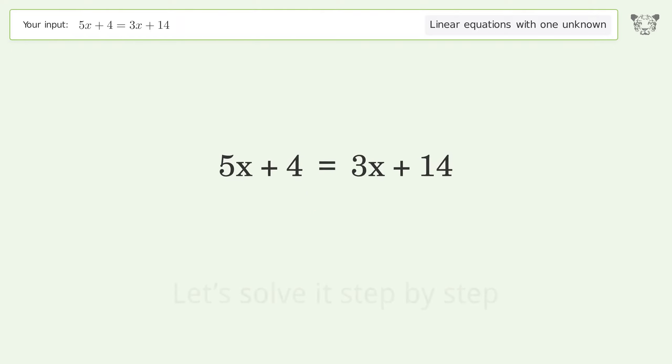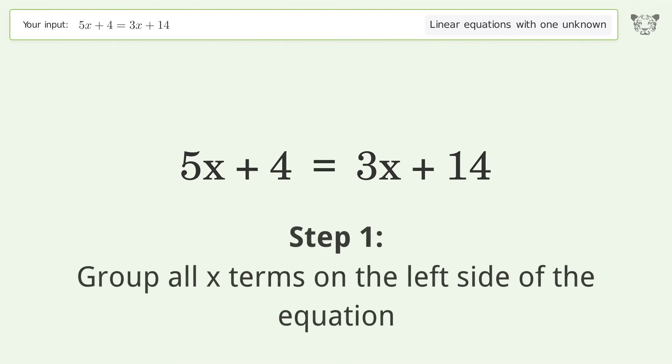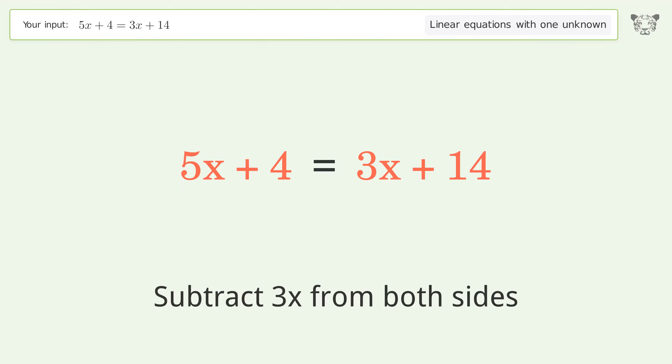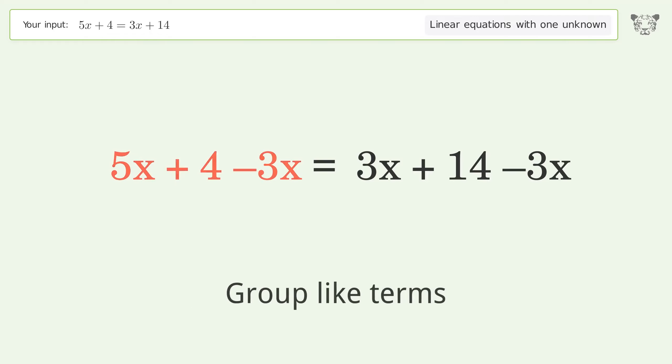Let's solve it step by step. Group all x terms on the left side of the equation. Subtract 3x from both sides. Group like terms.